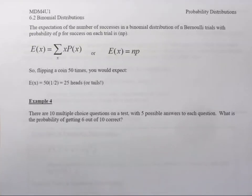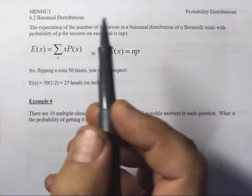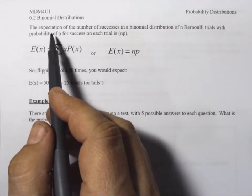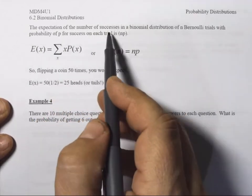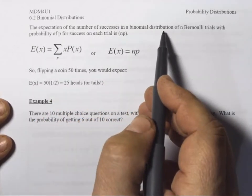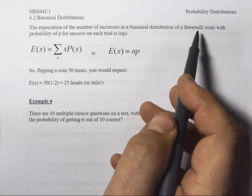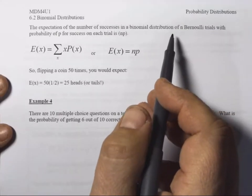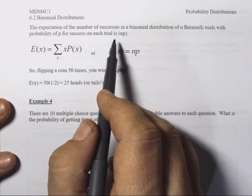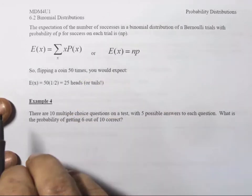Okay, last page for binomial distributions. We've talked a lot last lesson about the expected value. And the expectation of the number of successes in a binomial distribution is just the same with Bernoulli trials. And it's pretty easy to calculate. It is n times p.